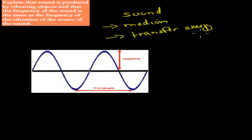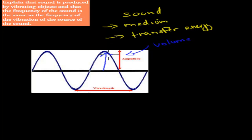We also talked about amplitude. The amplitude was the height, and the amplitude was the same as the volume. For example, if this was really high, that meant it was a loud volume because it was a high amplitude. Whereas if the amplitude was lower, from bottom to top, that would mean a lower volume.